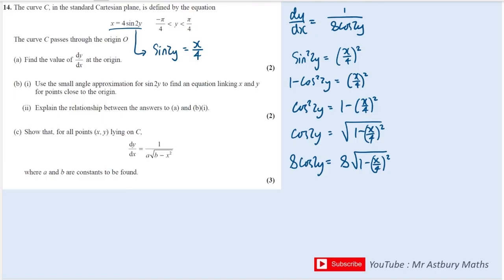And now I've got an expression for 8 cos 2y only in terms of x, and that can go right in here into my dy by dx equation. So I have dy by dx is equal to 1 over 8 lots of the square root of 1 minus x over 4 squared.